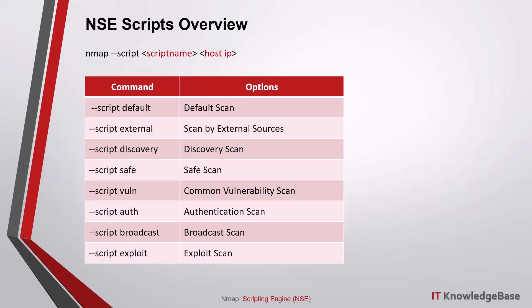The basic syntax for executing an NSE script is: nmap --script <script name> <host IP or FQDN>. There are various scripts to run with --script default. These scripts are the default set and run when using -sC or -A. This category can also be specified explicitly using --script=default.